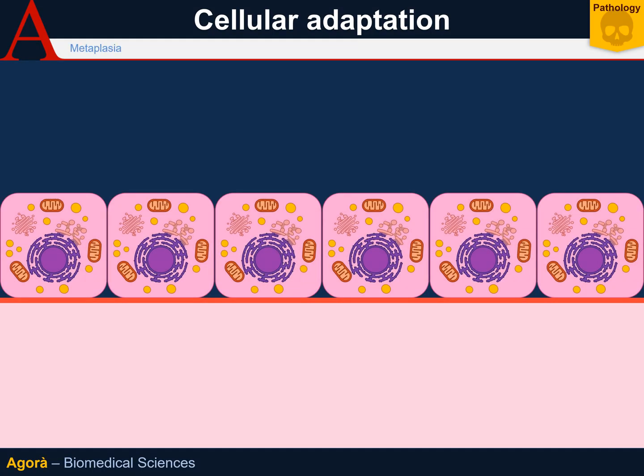Metaplasia is the reversible replacement of a differentiated tissue with another differentiated tissue. We must underline that it is usually the same type of histological tissue — epithelium replaced by epithelium, connective tissue by connective tissue.